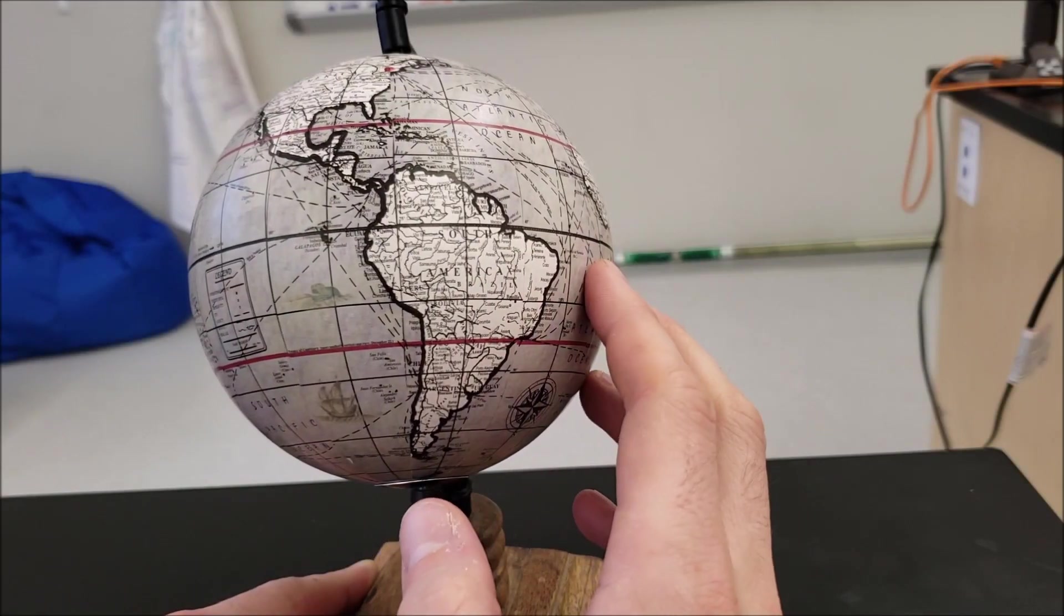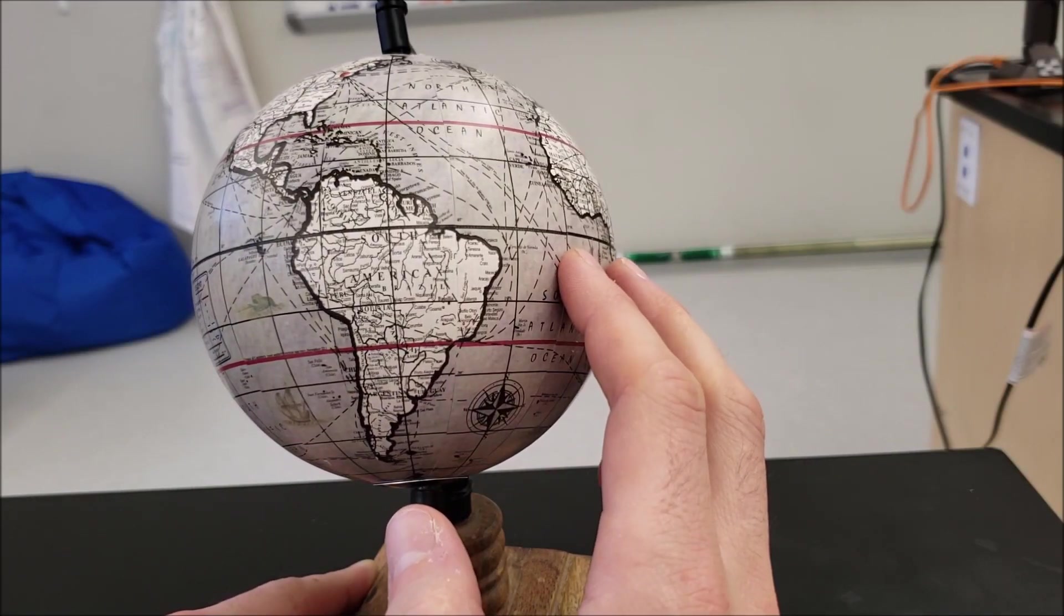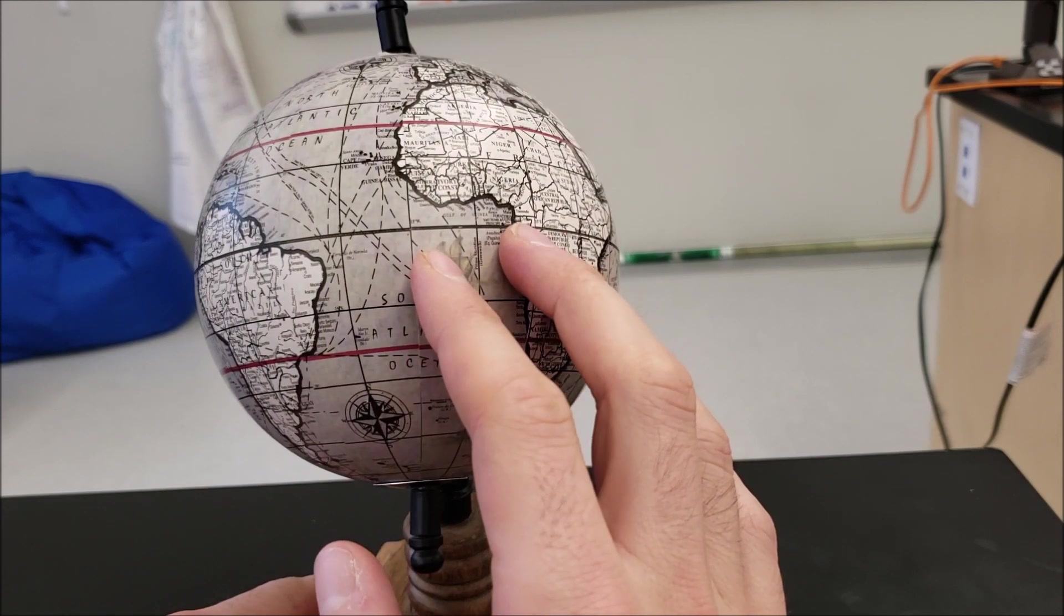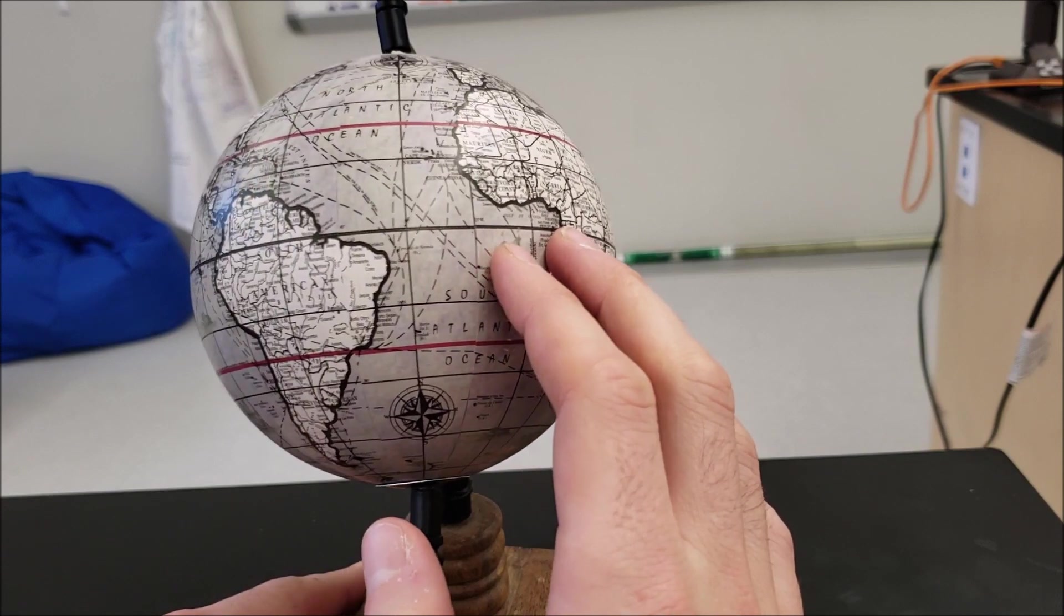And then the dot disappears. And now we'll count the other side. One, two, three. And about four again. Pretty much disappears again.